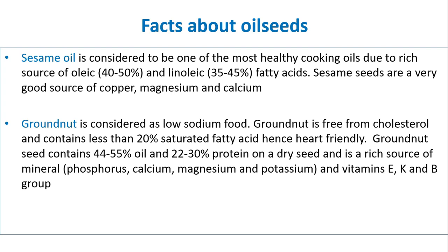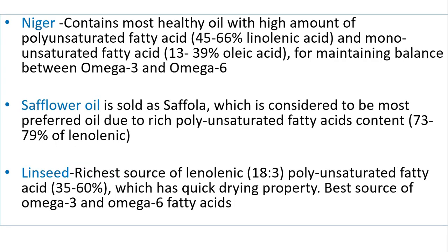Groundnut seeds contain 44–55% oil and 22–30% protein on a dry seed basis, and are a rich source of minerals like phosphorus, calcium, magnesium and potassium, and vitamins like E, K and B group. Niger contains the most healthy oil with a high amount of polyunsaturated fatty acids — 45–66% linolenic acid — and monounsaturated fatty acids — 13–39% oleic acid — for maintaining balance between omega-3 and omega-6 fatty acids.